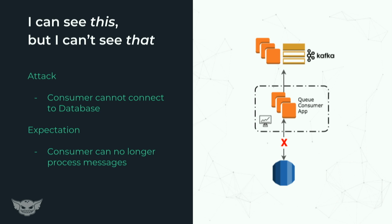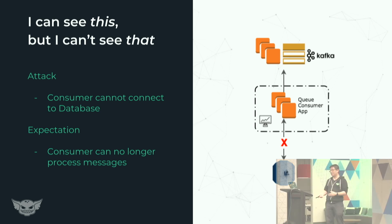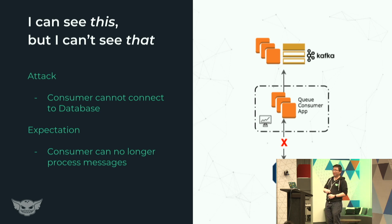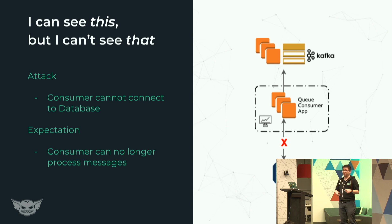This one is more on the monitoring side of things, involving a Kafka stream — essentially any message queue — where you have a consumer application taking messages from the queue, talking to a database, and processing them. The attack is straightforward: disconnect from the data store. The expectation is that because you can no longer pull information from the data store, you can no longer process messages — and that's actually what happened. The app, as they could see, stopped processing messages; the processing rate dropped a lot. But what they realized is that they actually don't have enough visibility to the message queue or Kafka. They had no idea how quickly it was building up or when Kafka was going to run out of space and lose data — a really critical thing they now want more visibility on.